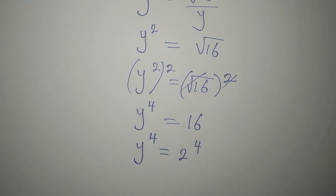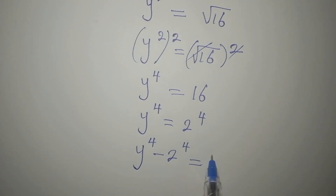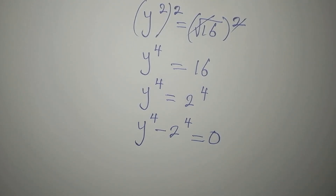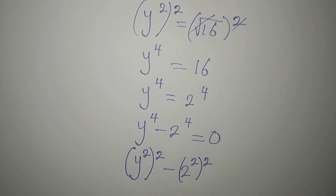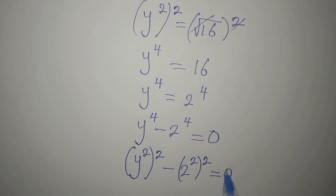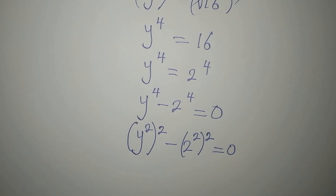Now, to continue, we bring 2⁴ to the left, so we have y to the power of 4 minus 2 to the power of 4 equals 0. We can rewrite this as y-squared squared minus 2-squared squared, which equals zero. We have not changed anything because we are multiplying the powers.